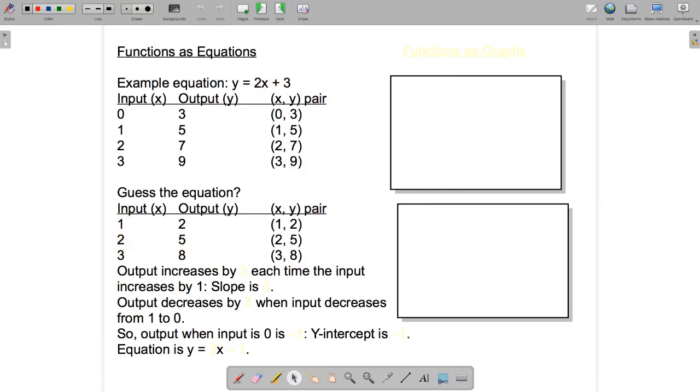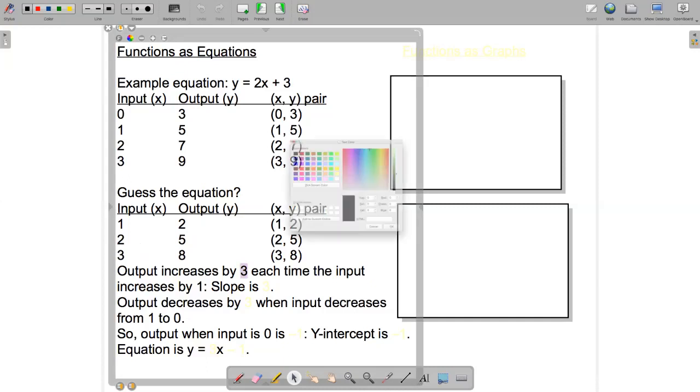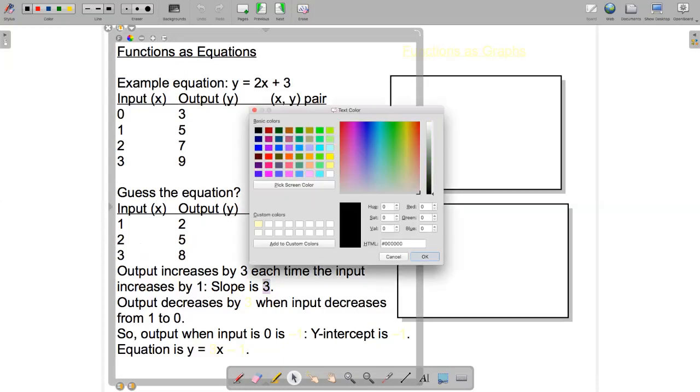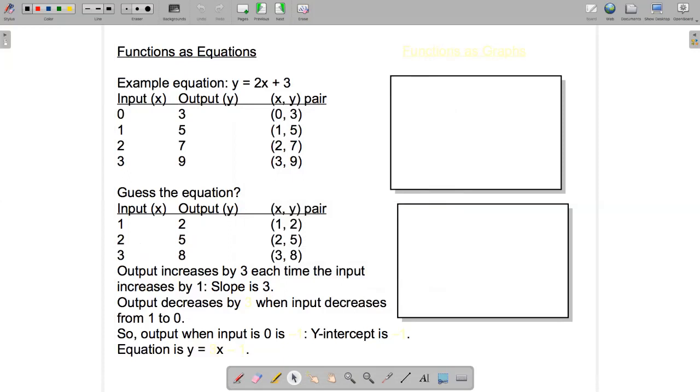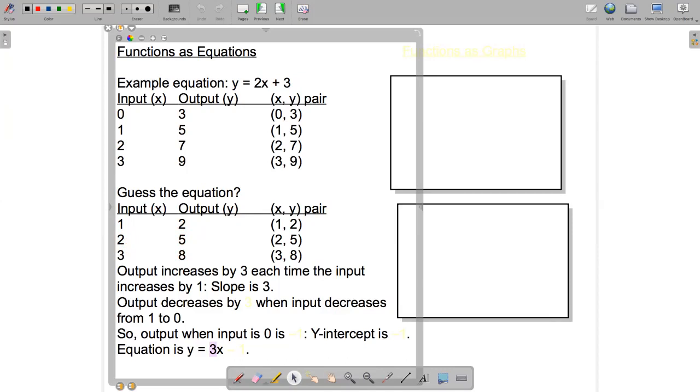This is called the slope of the linear equation. So in this case, the slope is 3, and this is the number that multiplies x in our function. You can see that up here, the 2 was how much the output increased when the input increased by 1. So if I write the equation of the lower table, our output is going up by 3 each time the input is going up by 1. So the slope is 3, which means in front of the x will be the number 3.